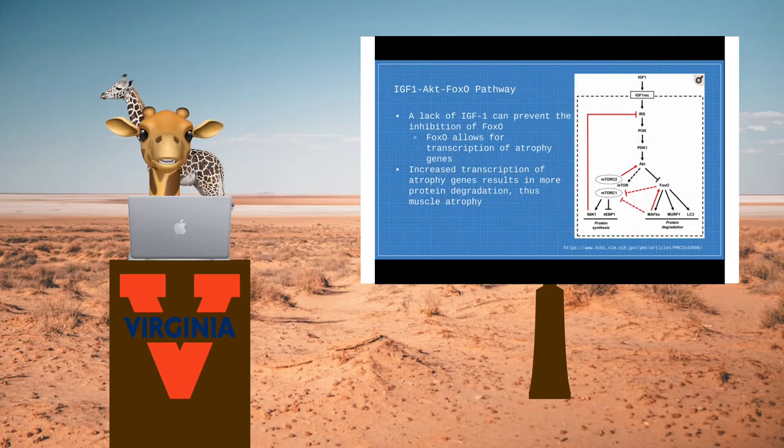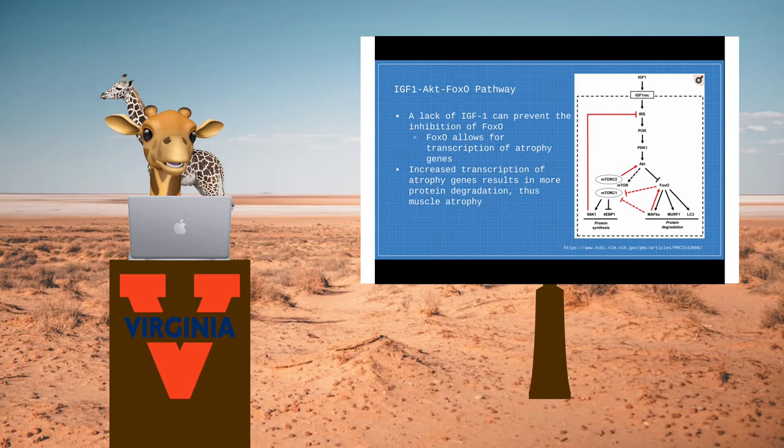The secretion of IGF-1 plays a crucial role in the regulation of the balance of muscle protein synthesis and degradation. In terms of stimulating atrophy, a lack of IGF-1 can prevent the phosphorylation of AKT and thus prevent the inhibition of FOXO transcription factors, which allow for the transcription of protein degradation genes, which ultimately cause increased protein degradation in muscle atrophy.